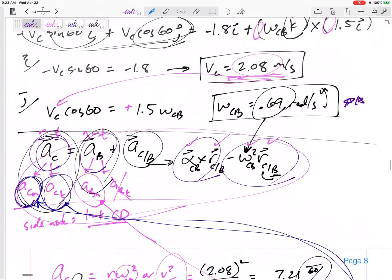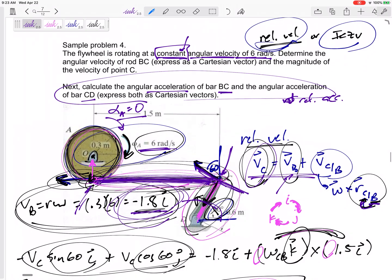But overall, for problem number four on our test, you already know the type of problem it's going to be. I would just, whatever you feel more comfortable with, either instantaneous centers or relative velocity.